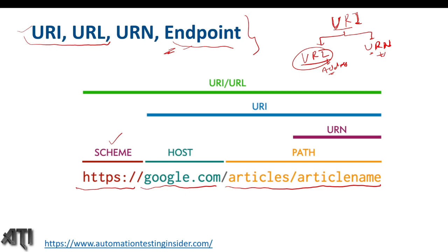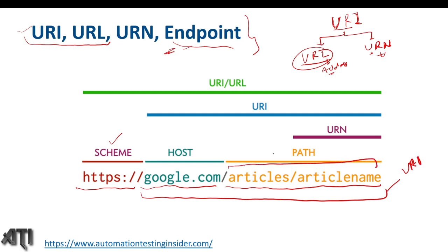We use that URL to request some data from the server and we use different HTTP methods to send those requests. In this example, if you talk about what is URI: except the protocol, the rest is nothing but the URI. The path portion is the endpoint. And the complete address from beginning to end is the URL.